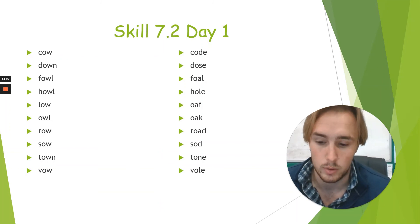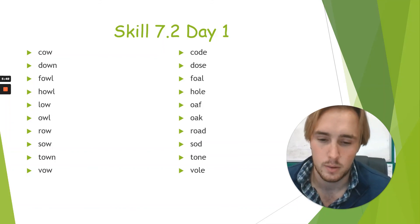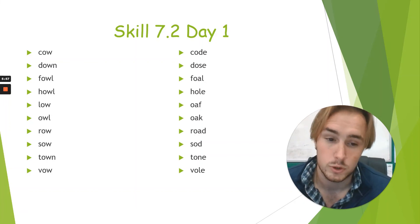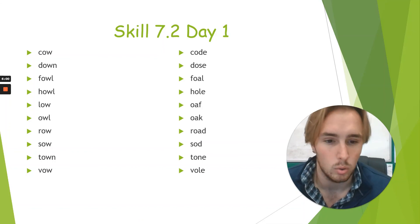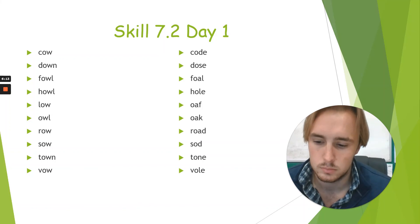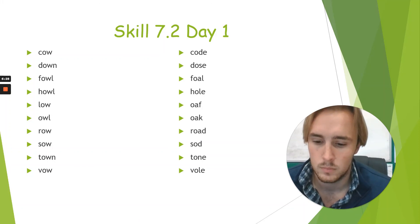Oaf — raise your hand on that one. Howl — down, was that a short O sound? That was an OW sound, we should have said no. Owl — say no on that one as well. Hole, that was a short O sound. Row — road — town — code — vowel — oak — cow — sod, that was a short O sound. Low, that was a long O sound. Vole, that was a short O sound. Vowel — foal.